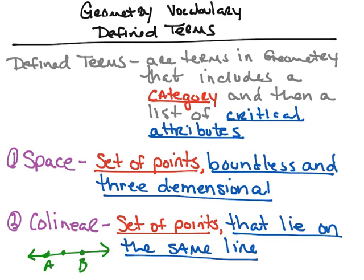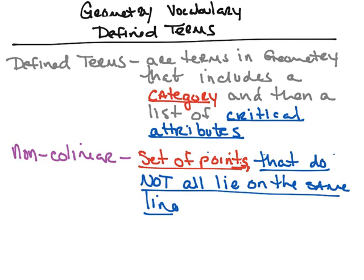I could have a third point that would also be collinear. The next defined term is non-collinear, and its definition is it's a set of points that do not all lie on the same line. The category is it's a set of points, and the critical attributes are that they do not all lie on the same line. So if I had a line with point A and point B not on that line, these would be considered non-collinear — they do not lie on the same line.